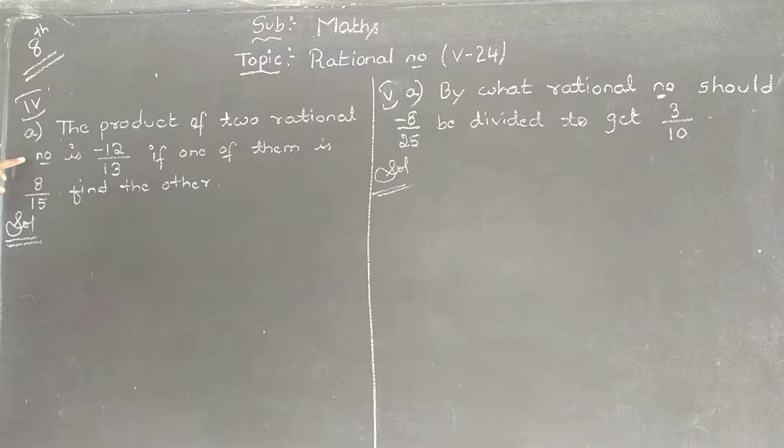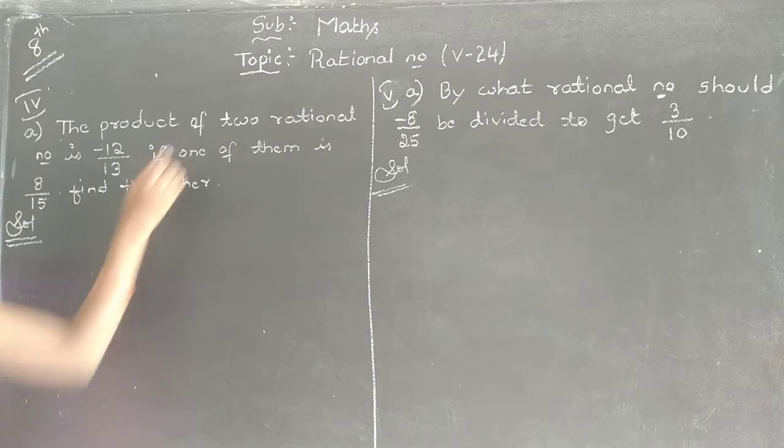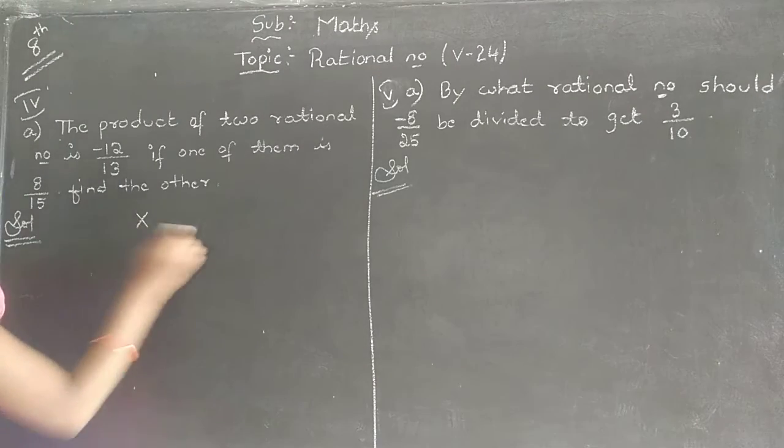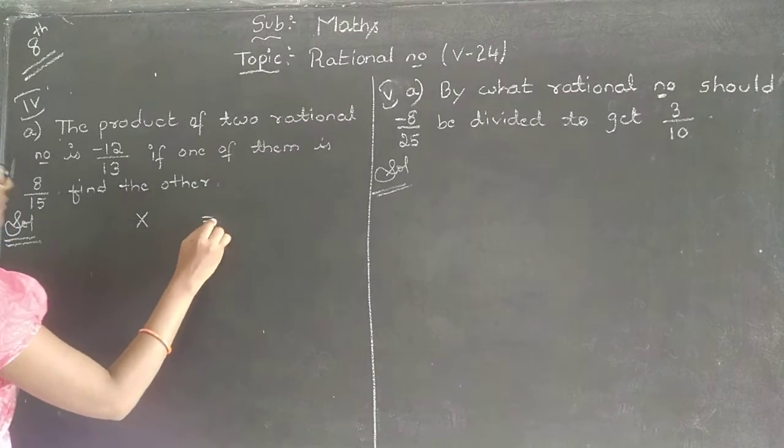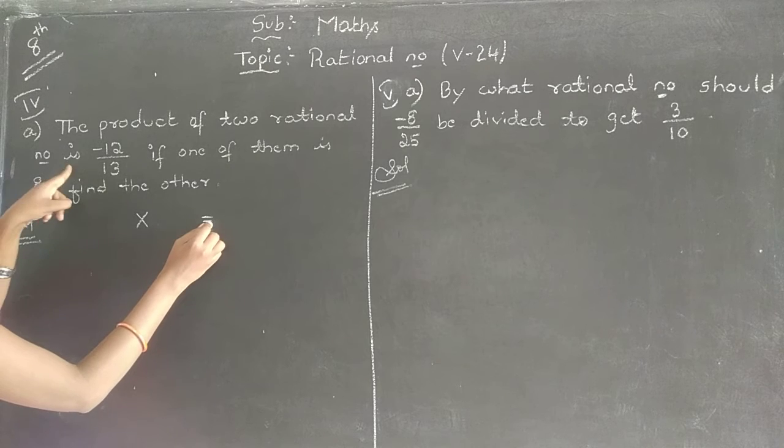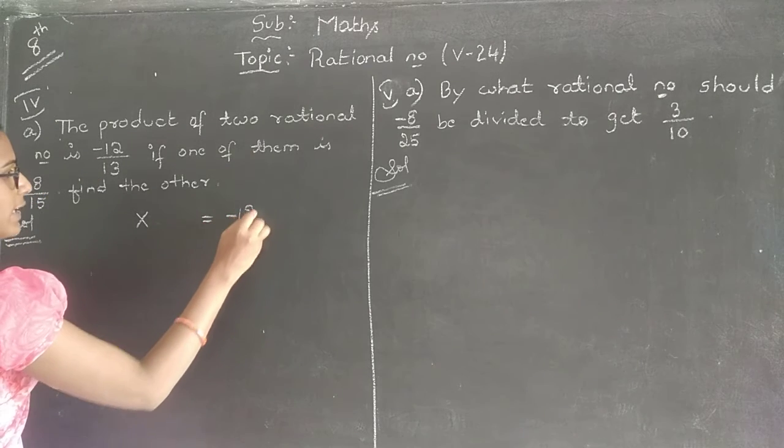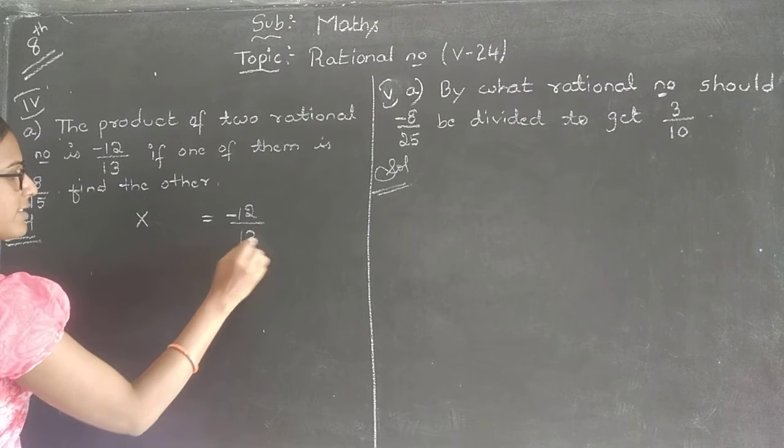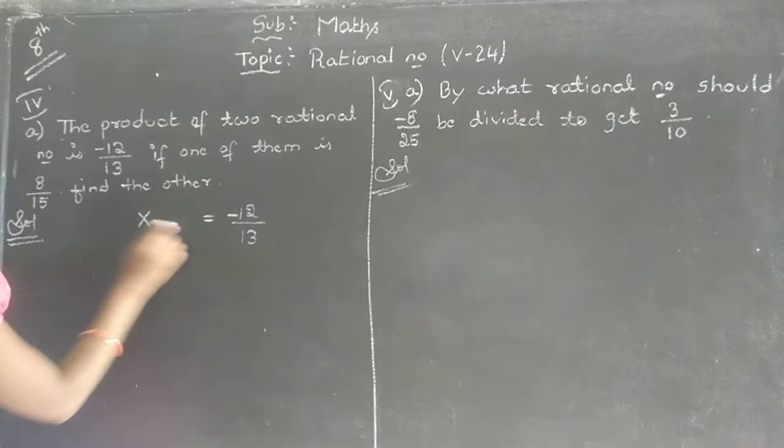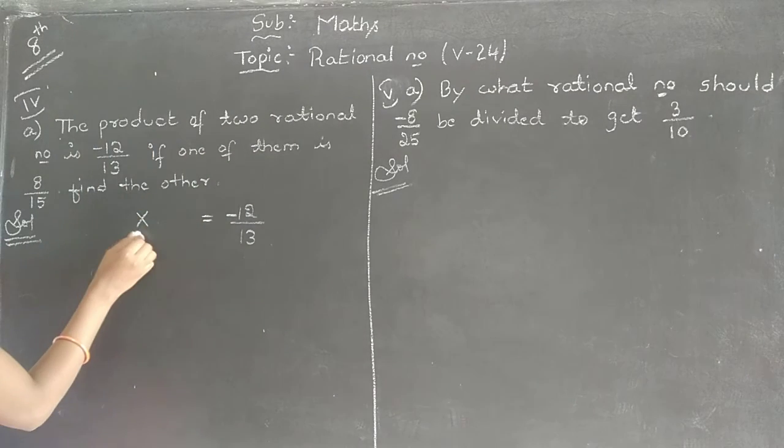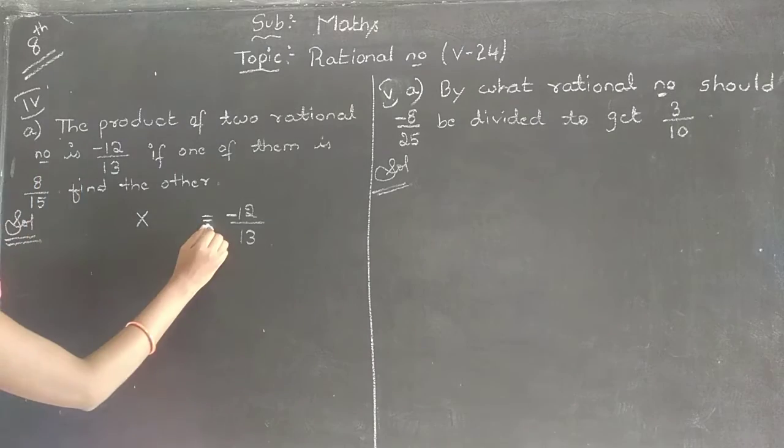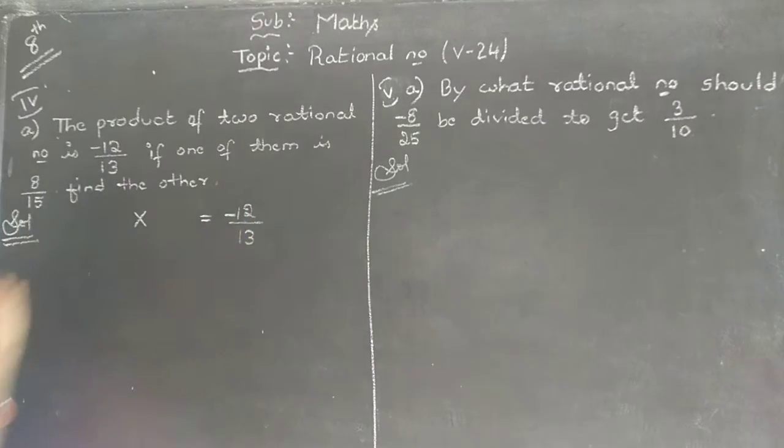The product of two rational numbers is minus 12 by 13. What is the meaning of that? Product. It means if I multiply two rational numbers, we will get it is nothing but is equal to minus 12 by 13.